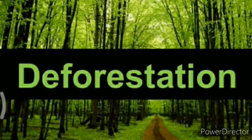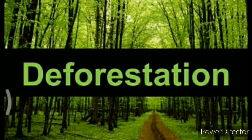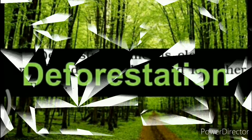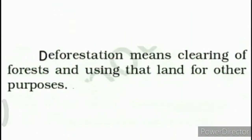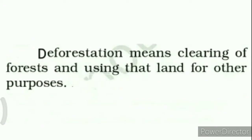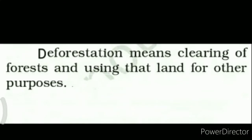So now let us understand what is deforestation. Aayee samajhte hain ki deforestation ka kya matlab hota hai. Deforestation means clearing of forests and using that land for other purposes. Deforestation ka matlab hota hai jangalon mein peedon ki katai karna, taaki us zameen ka jis ke upar peed uge huye hain, us zameen ko kisi doosre kaam ke liye, kisi doosre uddeshya ke liye istamal kiya ja sake.